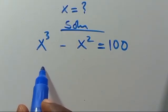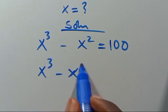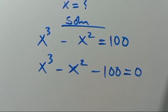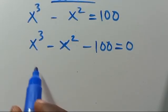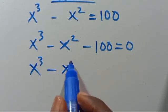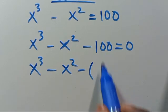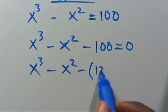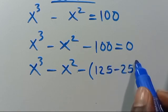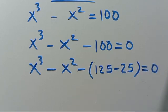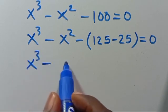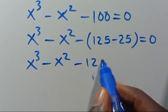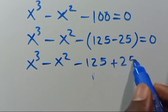So from here we have X to the power of 3 minus X squared minus 100 equals 0. From here we can write this as X to the power of 3 minus X squared minus 125 plus 25 equals 0, since 125 minus 25 gives us 100.